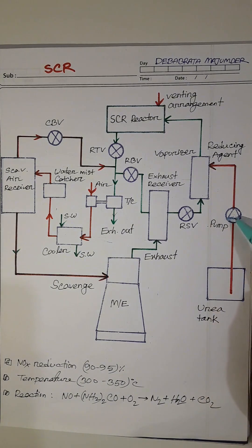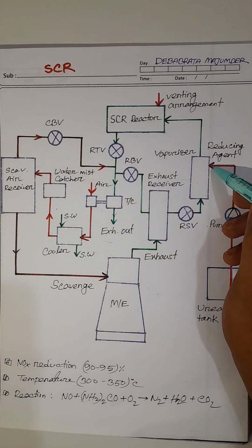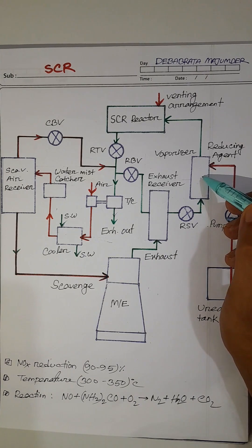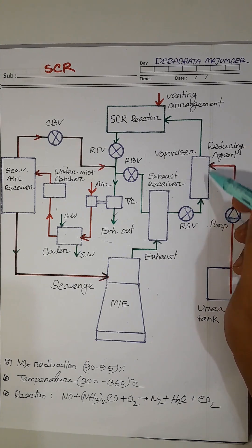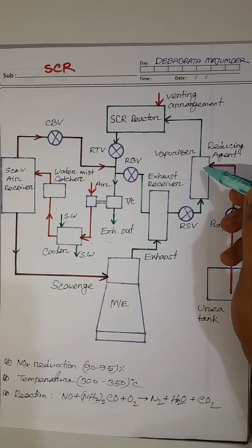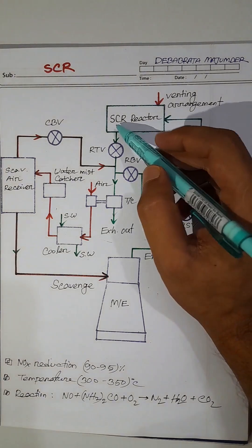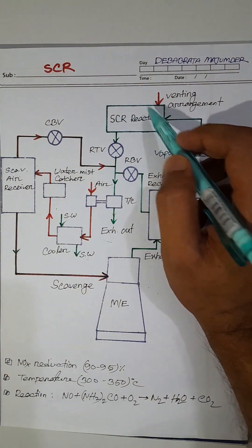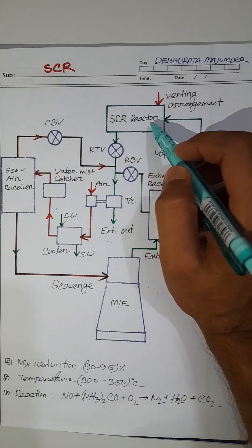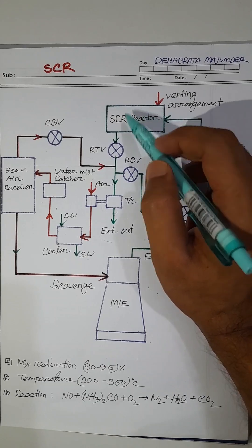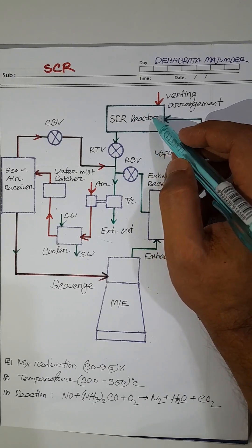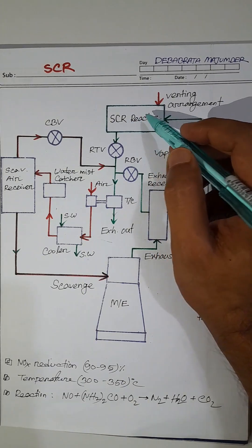As the urea dosing pump is started, this pump draws urea from the tank and injects it through the injector. The urea is vaporized and mixed with the exhaust gas at this chamber. As urea is mixed with the exhaust gas, it flows through the SCR reactor unit. In this unit, the chemical reaction occurs with the help of the catalytic reactor — the catalytic reactors are made of titanium or aluminium oxides.